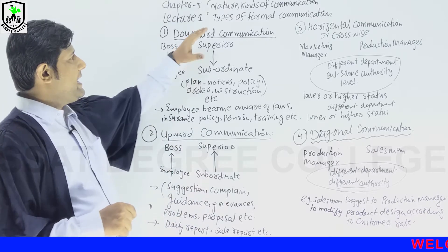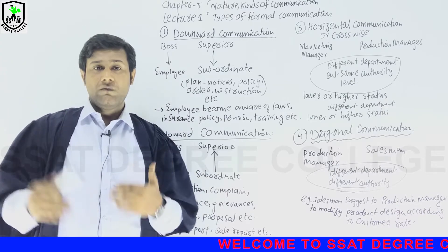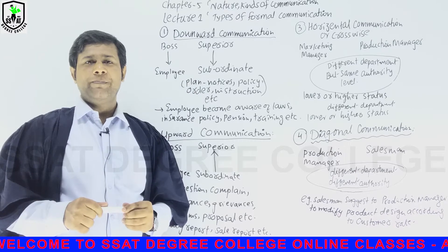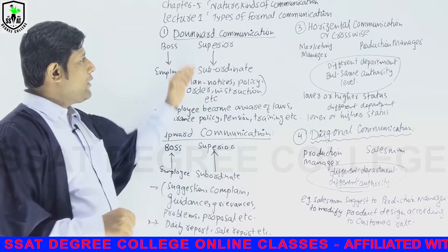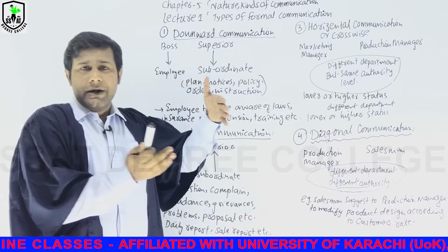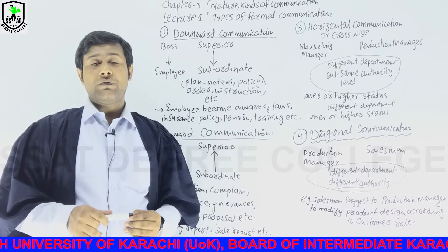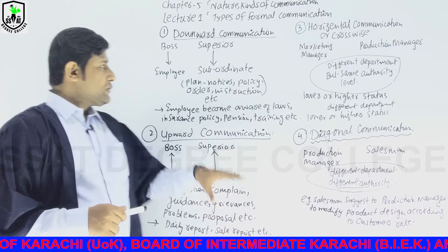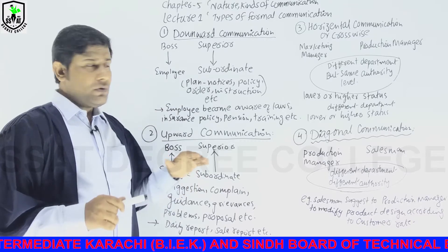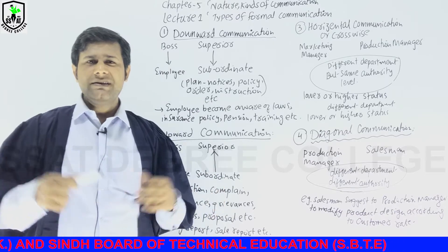The types of formal communication — we will discuss them one by one in detail so the topic will be clear. Number one is downward communication. Downward communication means when communication flows from superior to subordinate — from higher authority to lower authority. In any organization or department when communication flows from superior to subordinate, we call it downward communication, like from boss to employee. In this communication, plans, notices, orders, summaries, and memos are used.